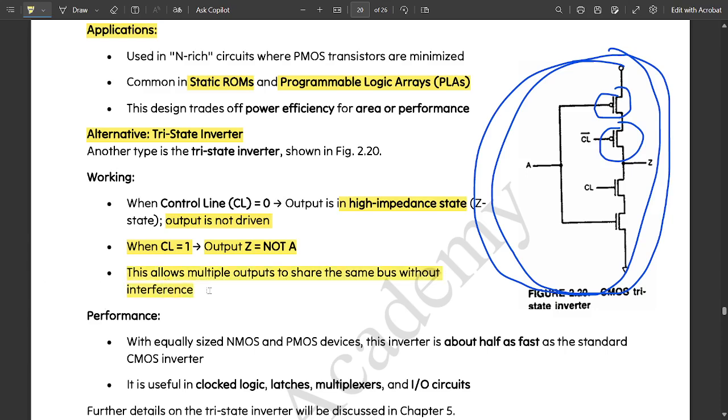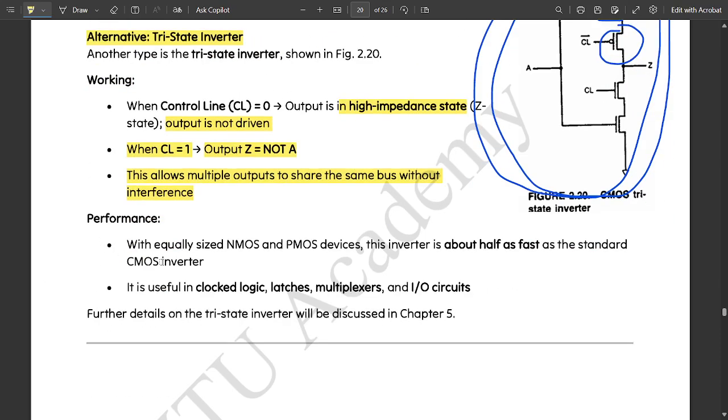Performance: with equally sized nMOS and pMOS devices, this inverter is about half as fast as the standard CMOS inverter. It is useful for clocked logic latches, multiplexers, and input-output circuits. Further details on the tri-state inverter will be discussed in the fifth module.